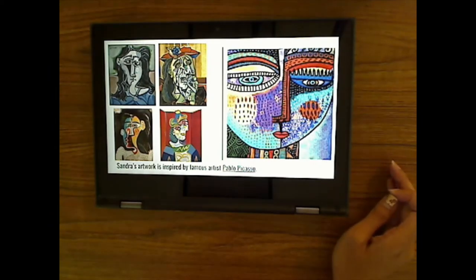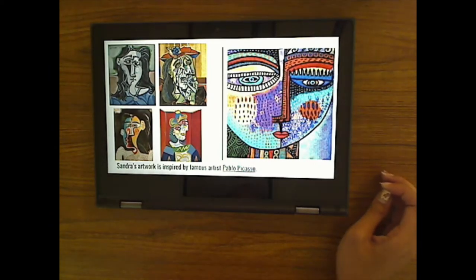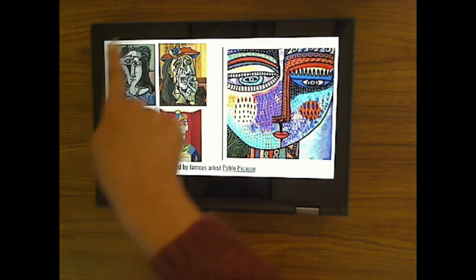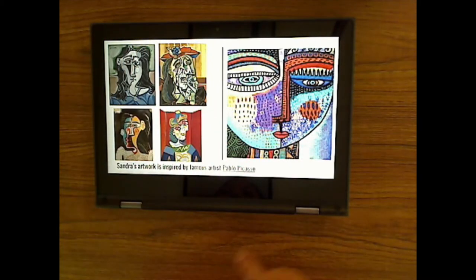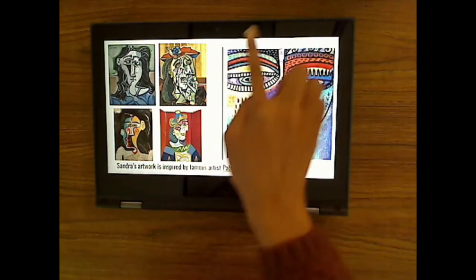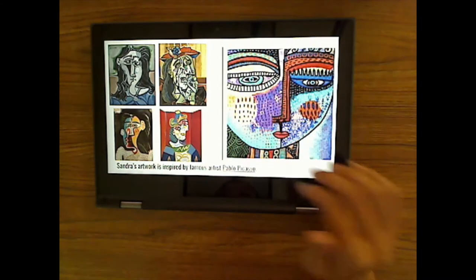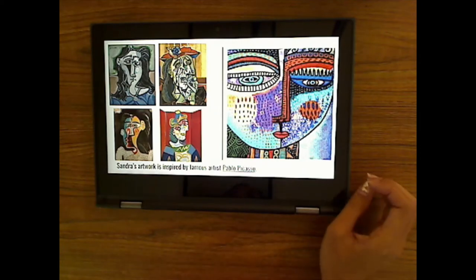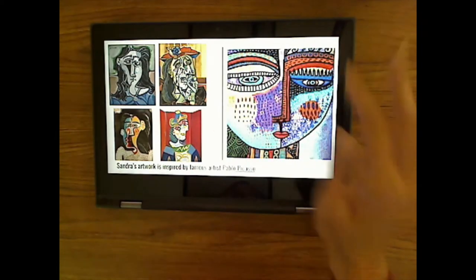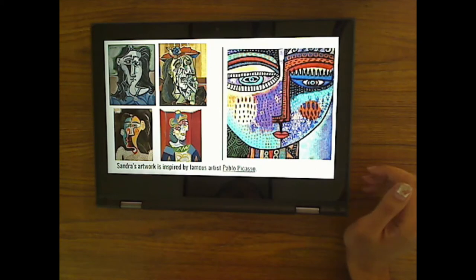So Sandra's artwork is inspired by another famous artist whose name is Pablo Picasso. So we have Pablo Picasso's artwork on the left side right here, these four pictures. And we have Sandra's artwork here on the right side. So you can see how she draws her portraits. It's very abstract, just like Pablo Picasso's. Abstract means it doesn't look like real life. This does not look like it was taken by a photograph or anything like that. It's abstract.